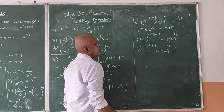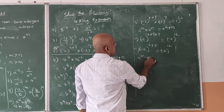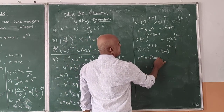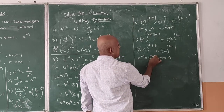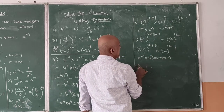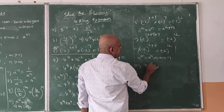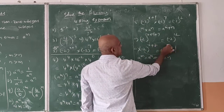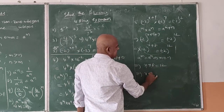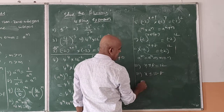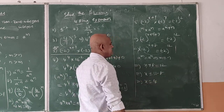Now, since the bases are equal, we apply: if a to the power of m equals a to the power of n, then m equals n. So the powers are equated: x plus 8 equals 12, which implies x equals 12 minus 8, so x equals 4.